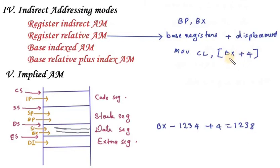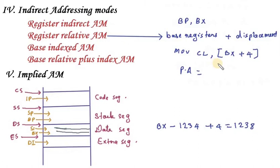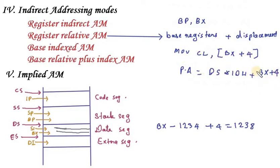BX plus 4: BX holds a particular value, and we add 4 to get a specific memory location. Since BX belongs to the Data Segment, the physical address is calculated as: DS × 10H + BX + 4. This gives us the actual physical address, and the 8-bit data at that location is retrieved.